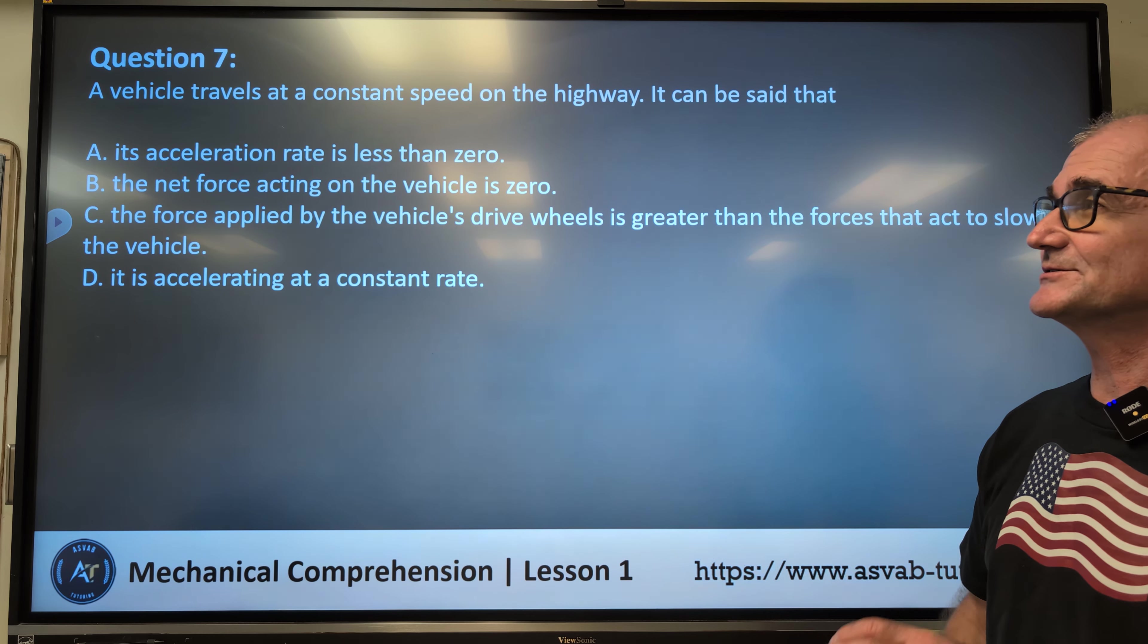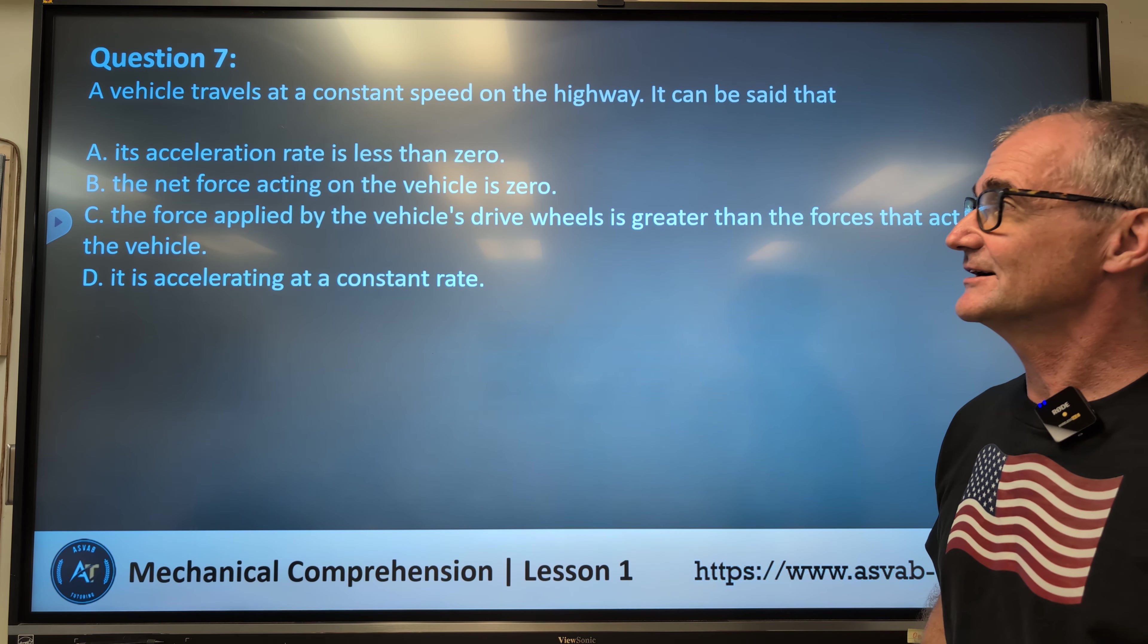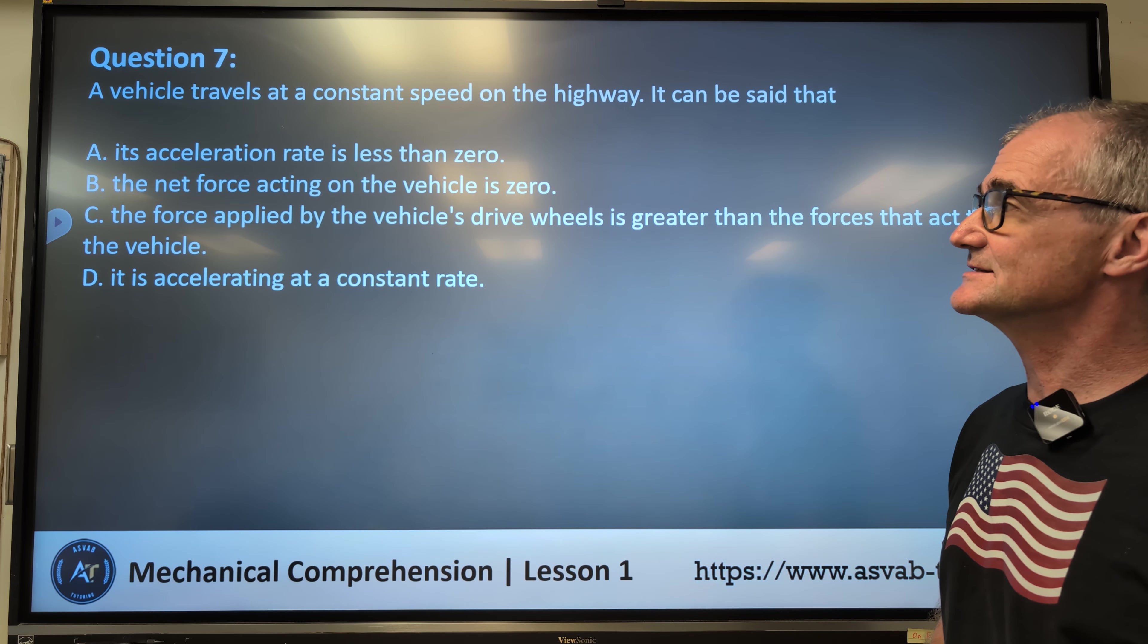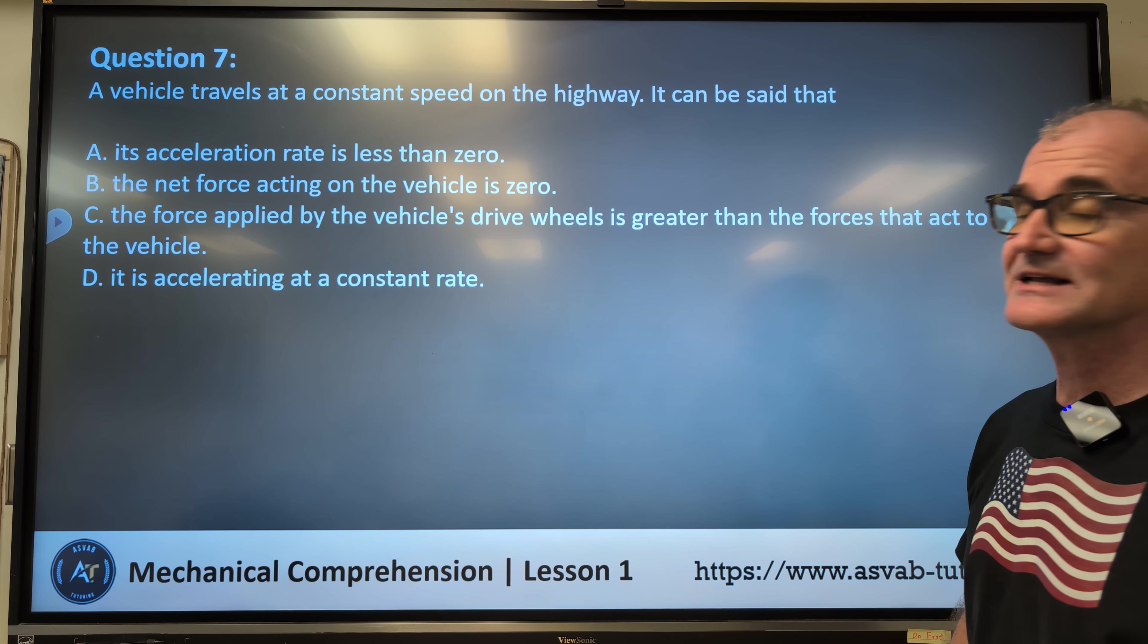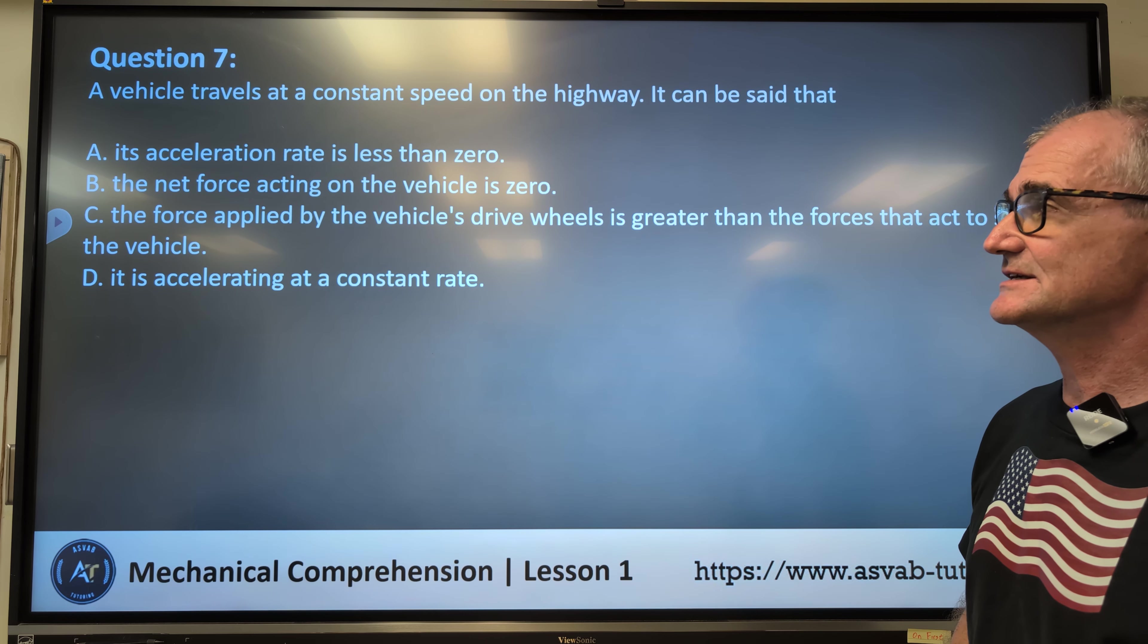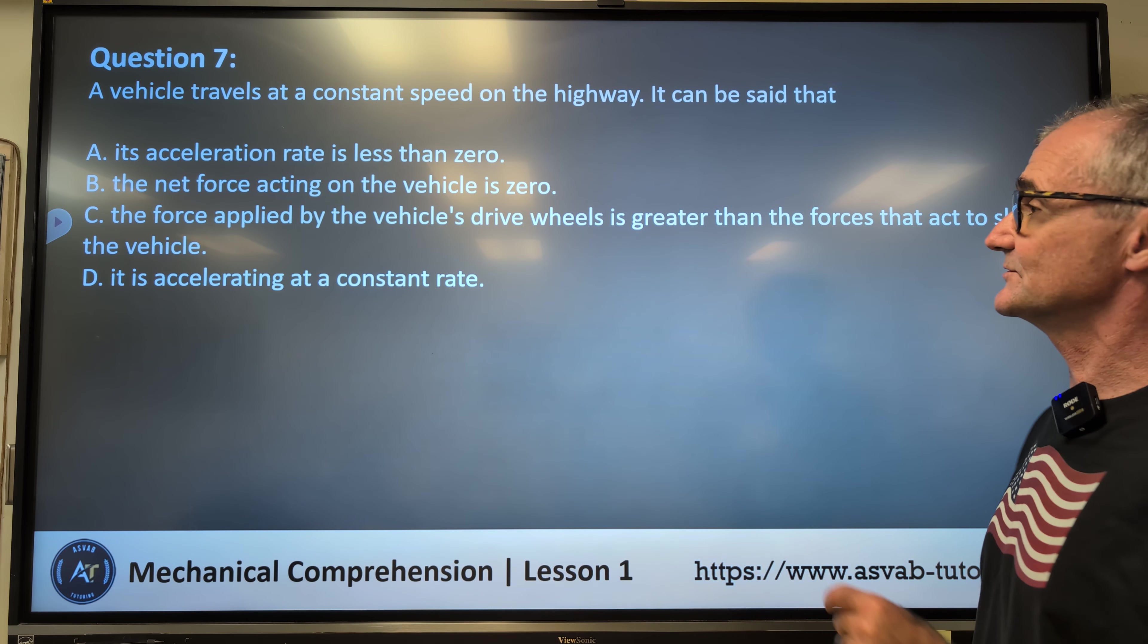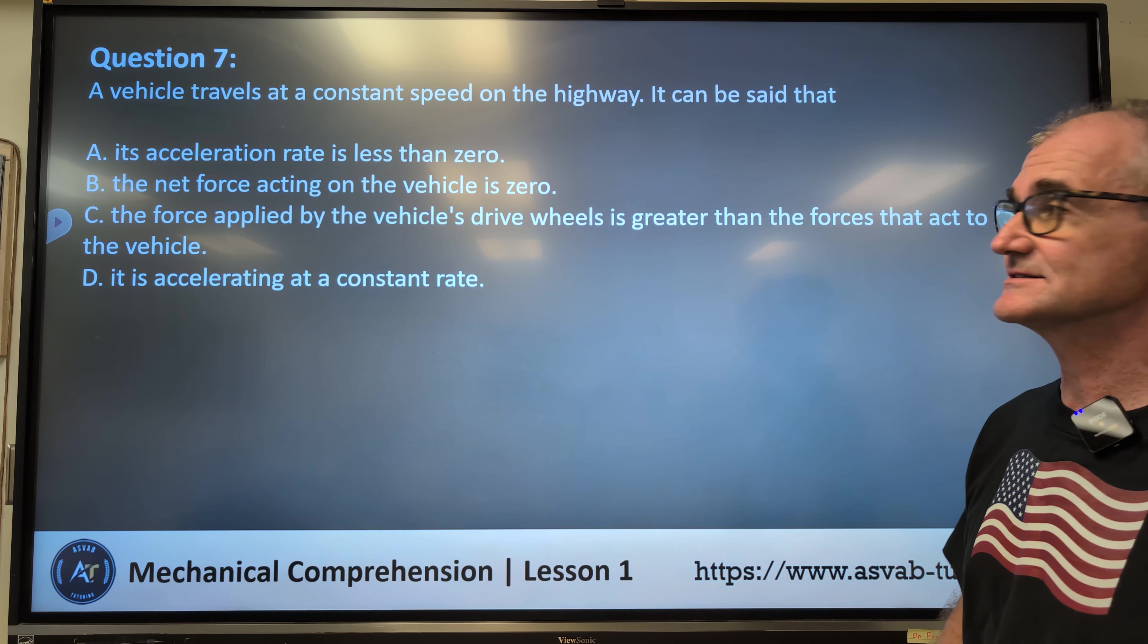A lot of these are conceptual, and some of them are actually computational, like that one. All right, question seven. A vehicle travels at a constant speed on the highway. It can be said that: A, its acceleration rate is less than zero, B, the net force acting on the vehicle is zero, C, the force applied by the vehicle's drive wheels is greater than the forces that act to slow the vehicle, or D, it is accelerating at a constant rate.